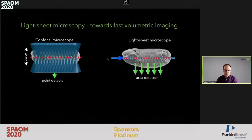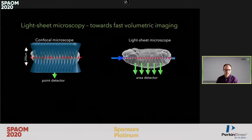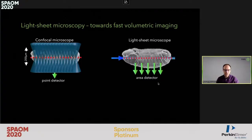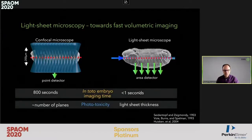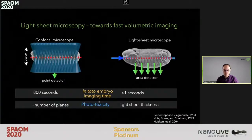The problems of slow speed and phototoxicity led to the introduction of the now widely known light sheet microscope, where we illuminate from an orthogonal direction from the side, and really only illuminate and excite the focal plane from which we are also collecting the signal. By reducing phototoxicity and increasing speed through use of an area detector such as a camera, this has led to vast improvements in bioimaging, making it possible to image an entire embryo in a fraction of a second while reducing phototoxicity by at least an order of magnitude.